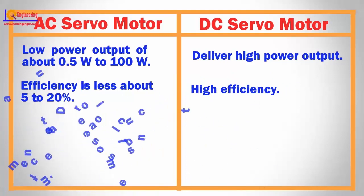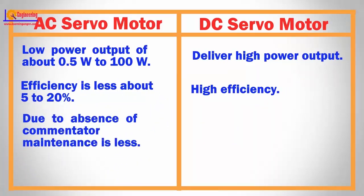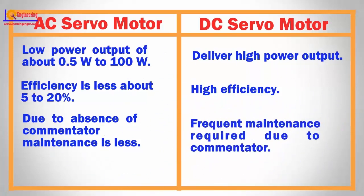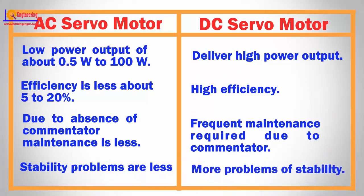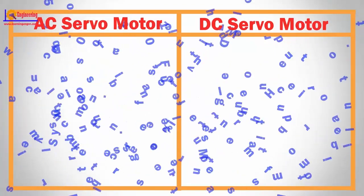AC servo motors require less maintenance due to the absence of a commutator. DC servo motors require frequent maintenance due to the commutator. Stability problems are less in AC servo motors, whereas DC servo motors have more problems with stability.